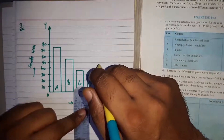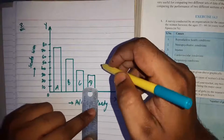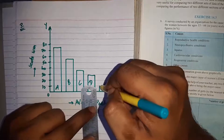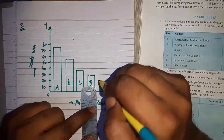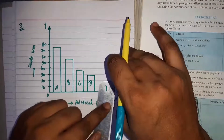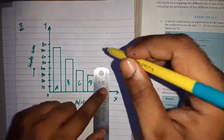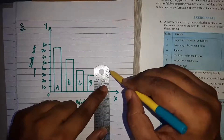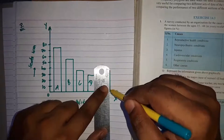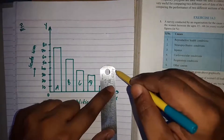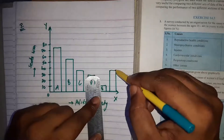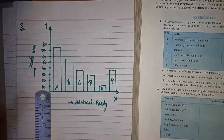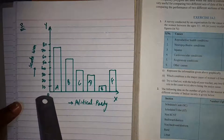Party E has frequency 10. Party F has frequency 37, which is the same as party C. The bar for party F is drawn at the 7th line between 30 and 40. This completes the bar graph for Question 3.